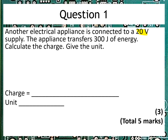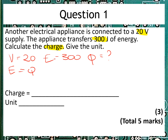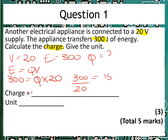So we know the voltage is 20, we've got energy is 300, and we're trying to find the charge. So we just jot those down: V equals 20, E equals 300, and we don't know the charge Q. So we're looking for an equation that has all those things in — that gives us E equals QV. Put the numbers in: 300 is equal to Q multiplied by 20. We reverse the maths, so the 20 goes underneath the 300. We've now got 300 divided by 20, which is 15. It's asked us for the unit, which is Coulombs for charge.